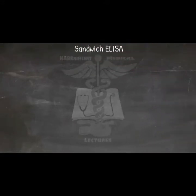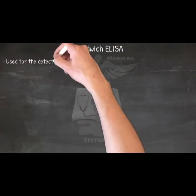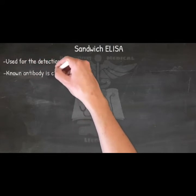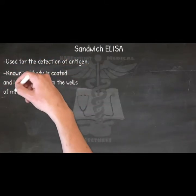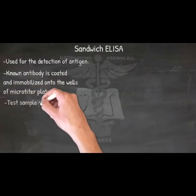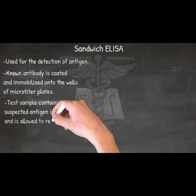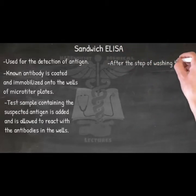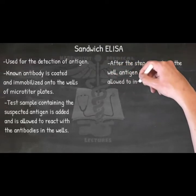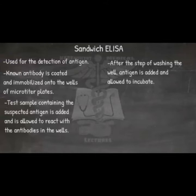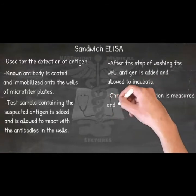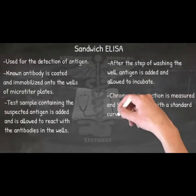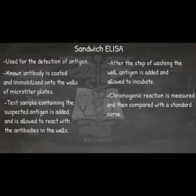Sandwich ELISA. The Sandwich ELISA is used for the detection of antigen. In this test, the known antibody is coated and immobilized onto the wells of microtiter plates. The test sample containing the suspected antigen is added to the wells and allowed to react with the antibodies. After washing the well, a second enzyme-conjugated antibody specific for a different epitope of the antigen is added and allowed to incubate. After removing any free secondary antibody by re-washing, the specific substrate is added and the ensuing chromogenic reaction is measured. The chromogenic reaction is then compared with a standard curve to determine the exact amount of antigen present in the test sample.